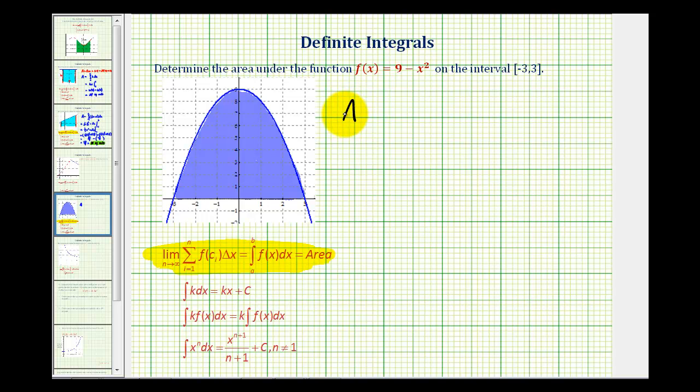So the area is going to be equal to the definite integral from negative three to three of nine minus x squared integrated with respect to x.